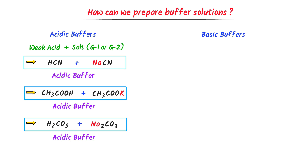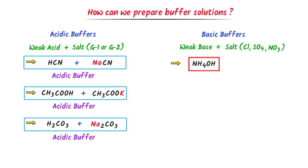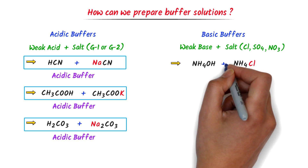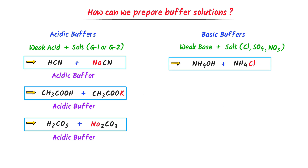By this way we can easily form acidic buffer solutions. While in case of basic buffer solution, I take a weak base and add its salt with chlorine, sulfate, or nitrate ions. For example, consider ammonium hydroxide. We know that it is a weak base. Now I remove the hydroxide ion from it and replace it by a chloride ion. I get ammonium chloride. A mixture of ammonium hydroxide plus ammonium chloride will form a basic buffer solution. Similarly, I can replace the hydroxide ion with a sulfate ion.